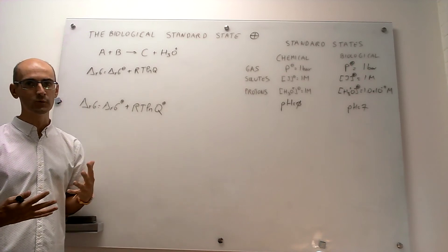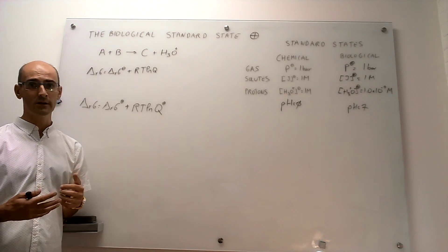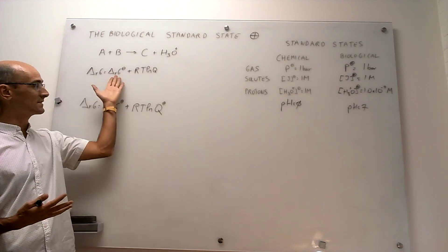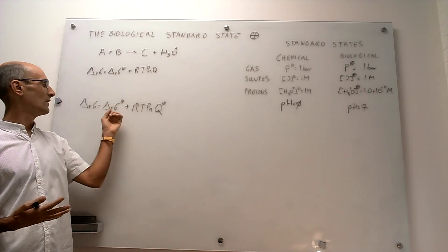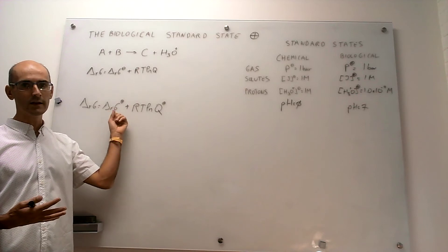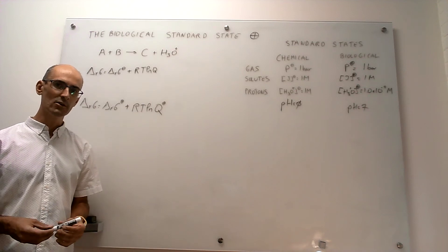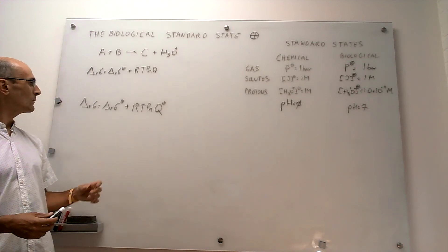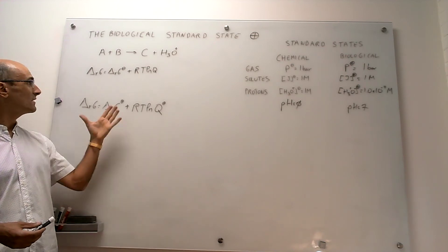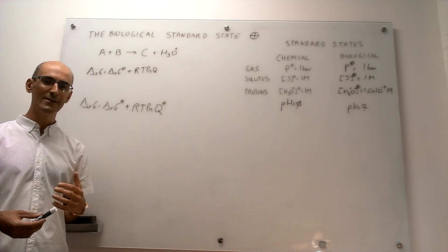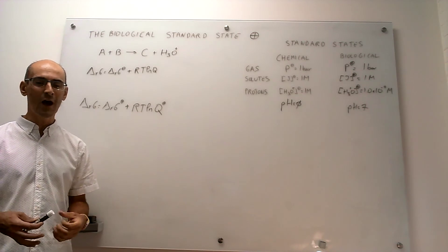You essentially have to choose which one you want to use. If you have the reaction Gibbs energy at the chemical standard state — given in tables or obtainable from data in tables — you would follow that route. But sometimes the biological standard state value is provided, so you would follow that route. Something that will appear in problems is how to obtain the reaction Gibbs energy at the biological standard state from the reaction Gibbs energy at the chemical standard state.